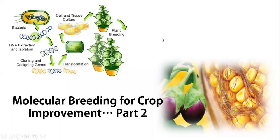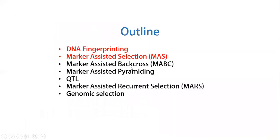Hello students, this is the second part of molecular breeding for crop improvement. In this section I am going to discuss marker assisted back crossing and marker assisted pyramiding. In the previous section I discussed DNA fingerprinting and marker assisted selection — I hope you have understood those two parts.